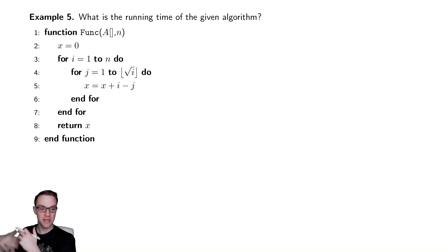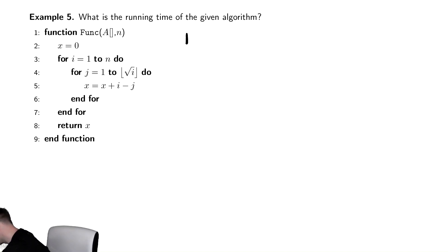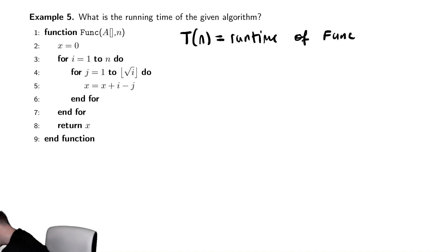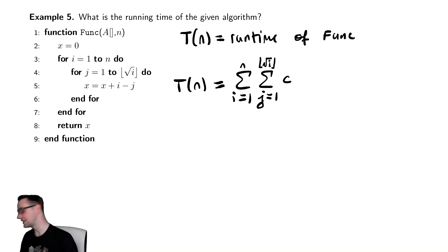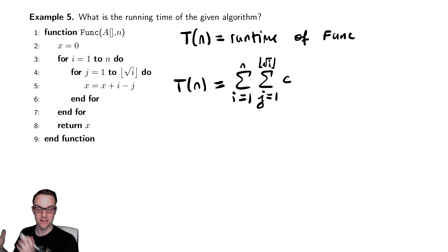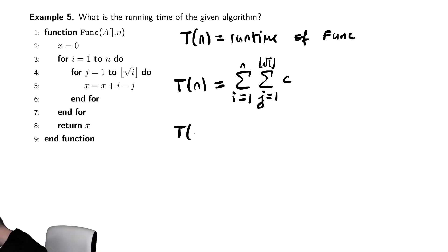Just like before, we are going to take the for loops and then convert them into summations. All of that remains the same. We should define what T(n) is — T(n) is the runtime of func, or some other such thing, to let the reader know what we're talking about. Then we can write T(n) as two summations: the sum from i equals 1 to n of the sum from j equals 1 to the floor of radical i of the inside thing.